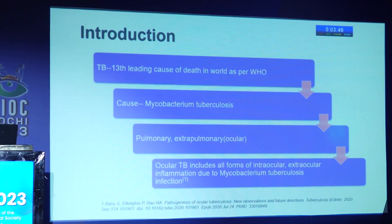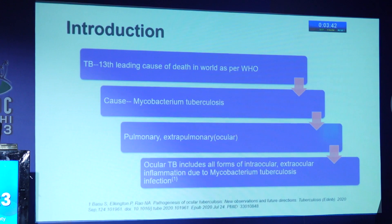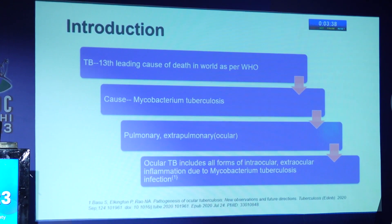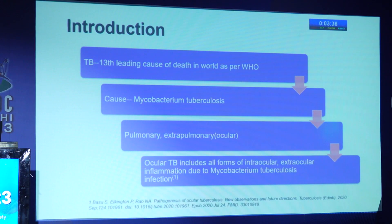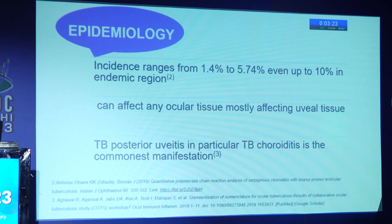TB is the 13th leading cause of death in the world as per WHO, caused by mycobacterium tuberculosis. It has both pulmonary as well as extra-pulmonary manifestations. Ocular TB includes all forms of intraocular as well as extraocular inflammation due to mycobacterium tuberculosis infection. Its incidence ranges from 1.4% to 5.74%, even up to 10% in endemic regions. It can affect any ocular tissue but mostly uveal tissue. TB posterior uveitis and particularly TB choroiditis is the commonest manifestation.